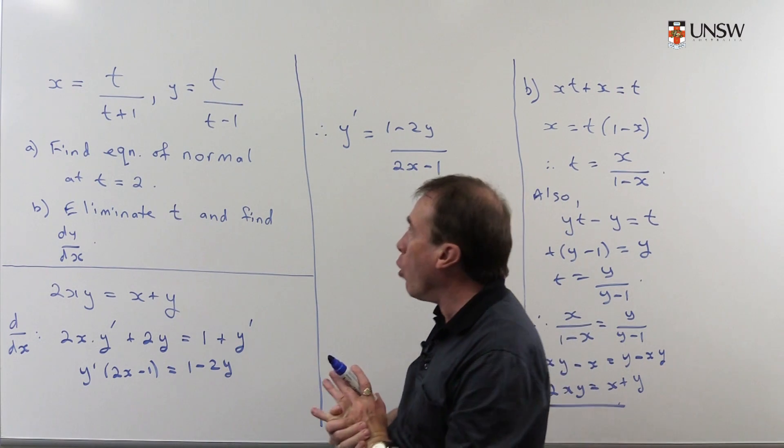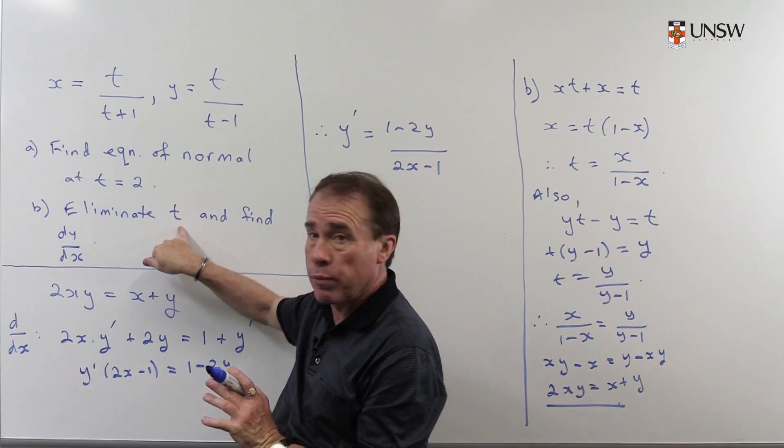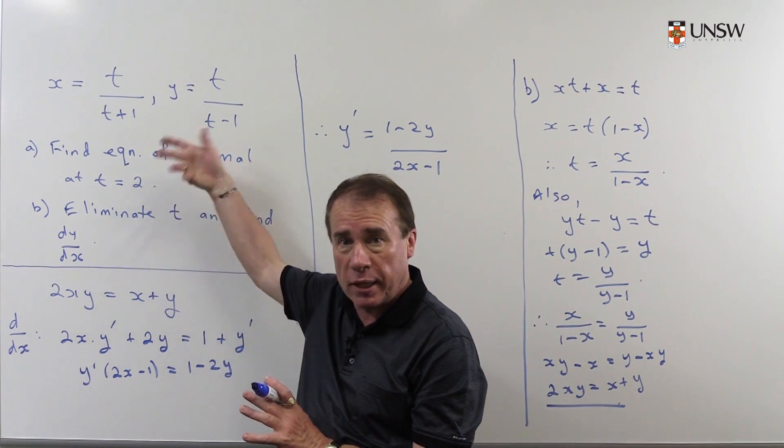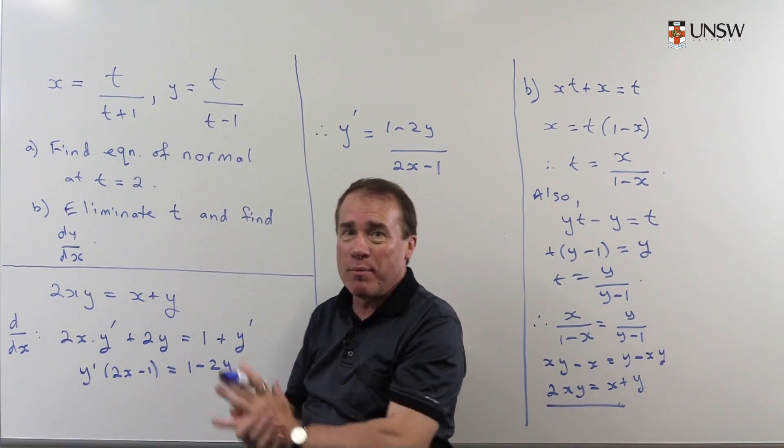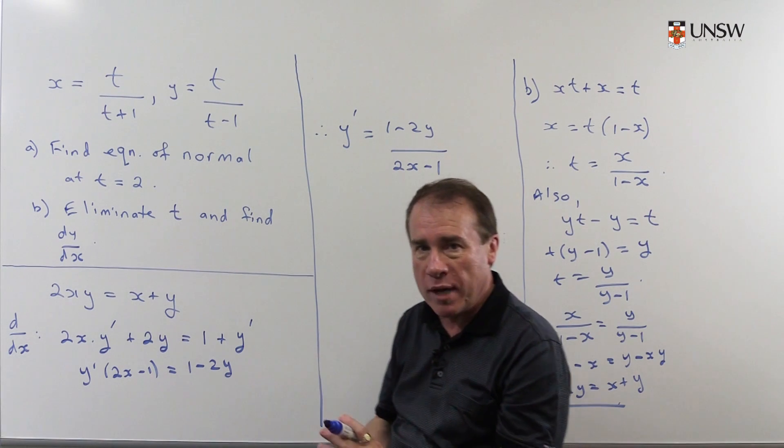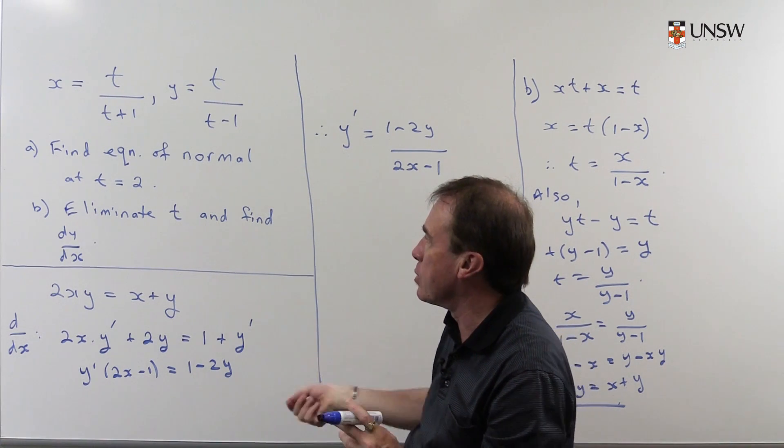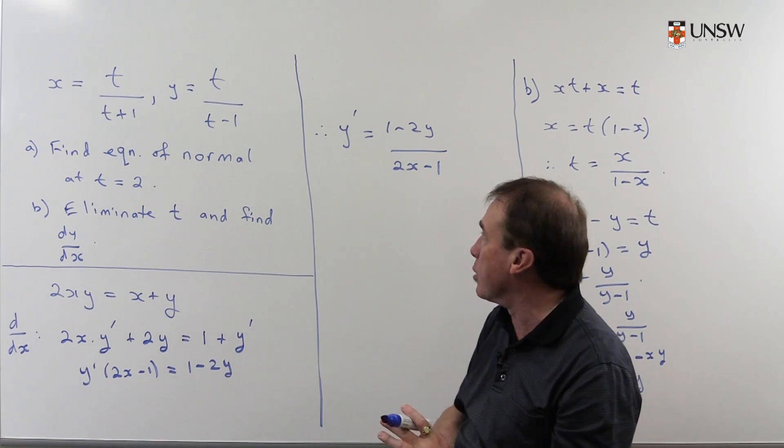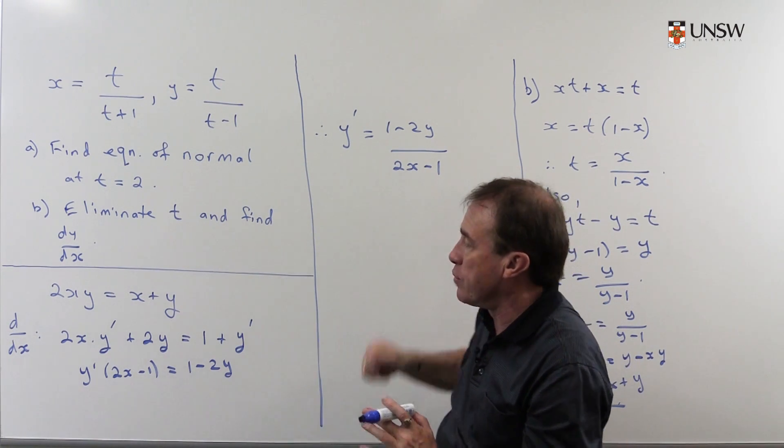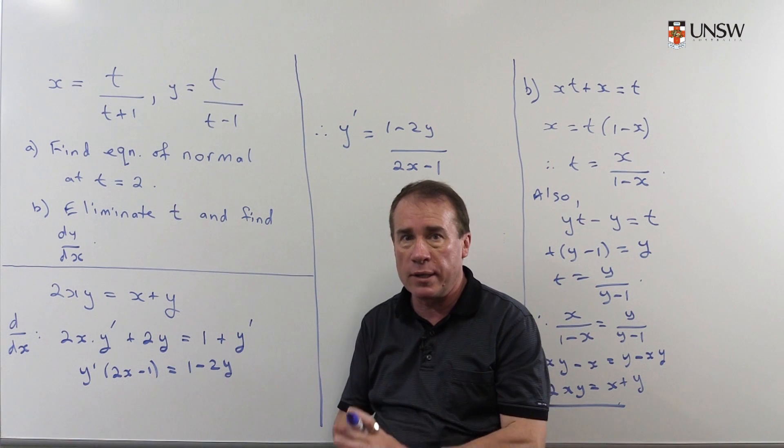By the way, in general, it's not always possible to eliminate the parameter algebraically. In this particular case, we could. But in many problems, it's algebraically impossible to eliminate the parameter. And that's why we need to do things parametrically. In this case, we were able to eliminate the parameter. So we could get expressions for the derivatives in two different ways.